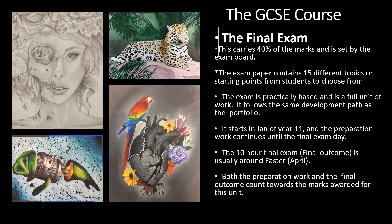The final part of the course is the exam unit. This carries 40% of the marks and is set by the exam board. You will receive an exam paper containing 15 different topics or starting points for a project, and you will need to choose one of them. The exam is practically based and is a full unit of work, following the same development path as the portfolio. It starts in January of Year 11, and the preparation work continues in every art lesson until the final exam day, which is normally around Easter time, where you will sit the 10-hour final exam. It is really important that you know that both the preparation work and the outcome are both marked towards the final grade that you get.